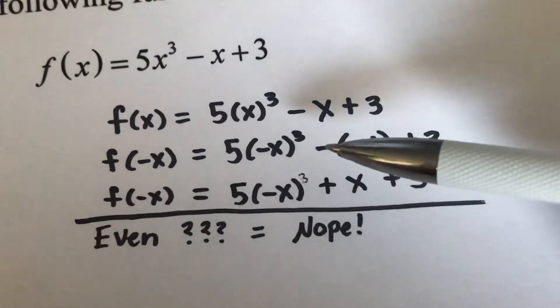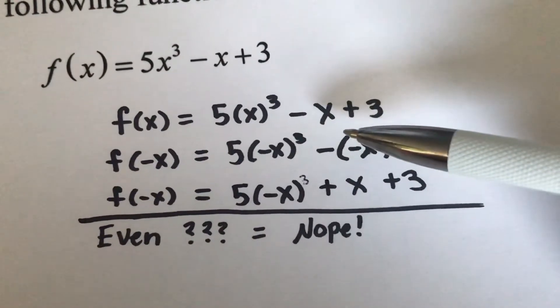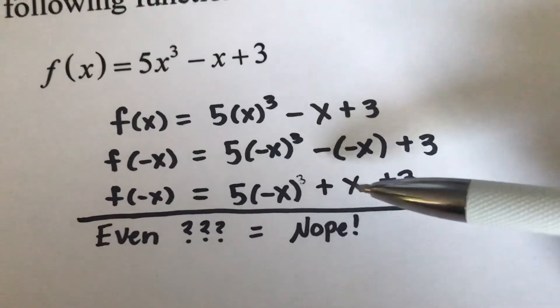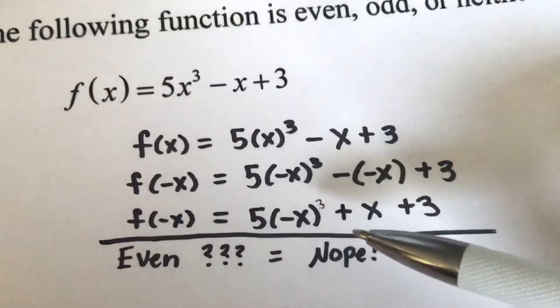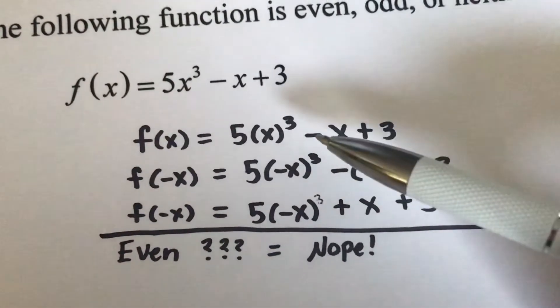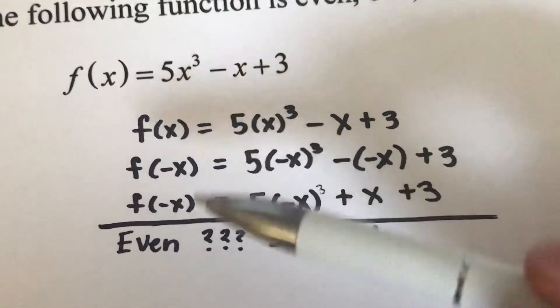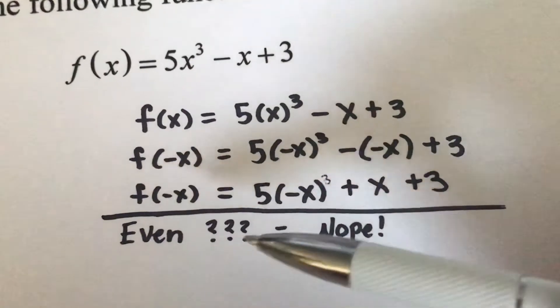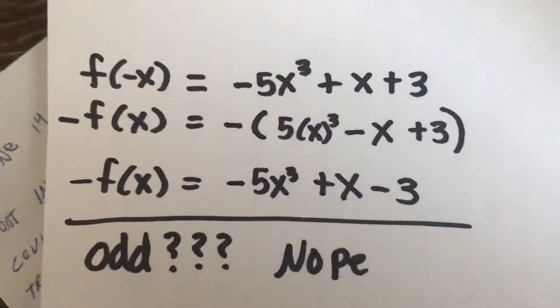Then we've got minus negative x that just becomes a plus sign, and so you've got plus x, and then the plus 3 will stay the same. And so as you can see, this positive x is different from that negative x, this negative is different from the positive, and so f of x is not equal to f of negative x. And so this equation is not even.